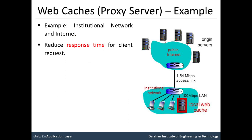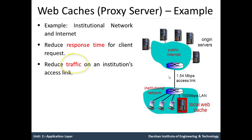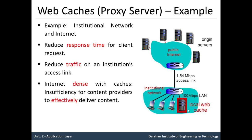Because many clients request the same websites — for example, gtu.ac.in — some objects are stored locally in the cache. So it directly replies with the same cached object instead of going to the origin server. This saves response time for the client and also reduces traffic on the institution's access link for requests not directed to the origin server but served from the local web cache. This improves efficiency for the content provider to effectively deliver content.